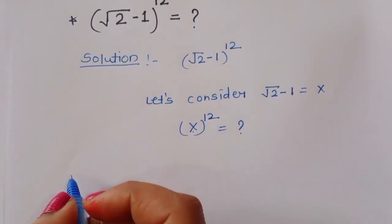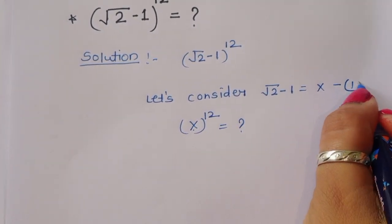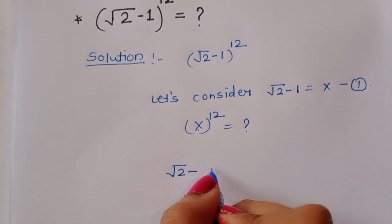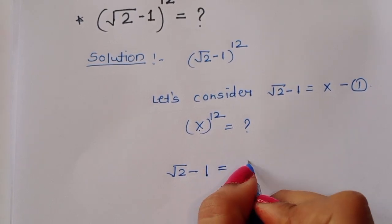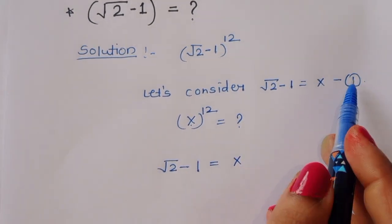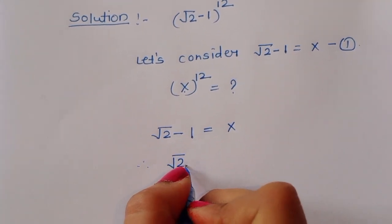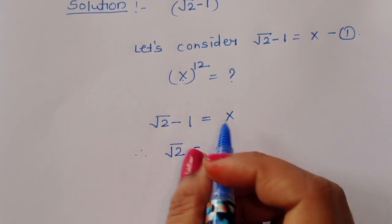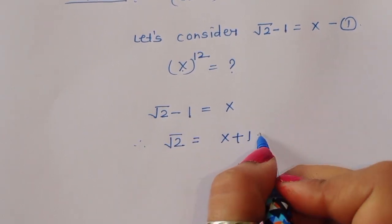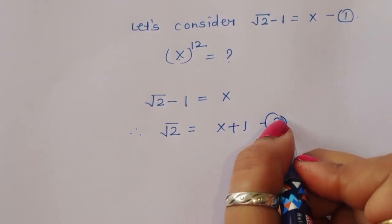This is equation number 1: √2 - 1 = x. Therefore, we can say √2 = x + 1. This is equation number 2.